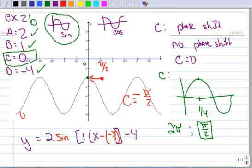And I can simplify that a little bit to be y equals 2 times sine. Go ahead and keep the 1 there. You don't have to, but you can keep the 1 there to show that B is 1. And this simplifies to x plus π over 2 minus 4.